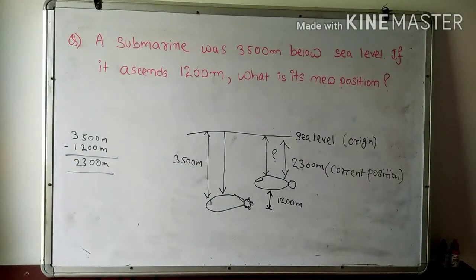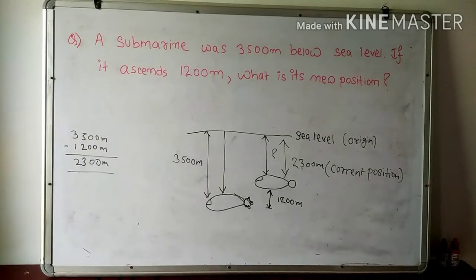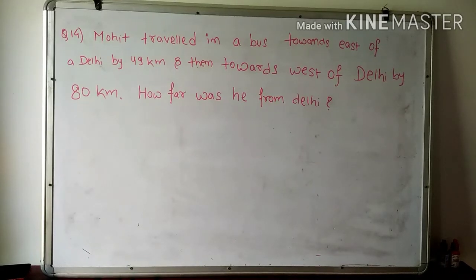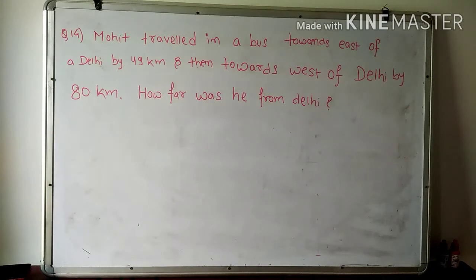I hope you understood the question properly. We are moving to the next question: Mohit travels in a bus towards east of Delhi by 49 km and then towards west of Delhi by 80 km. How far was he from Delhi? This is a word problem. We are going to solve it by reading its statement step by step and following the procedure.